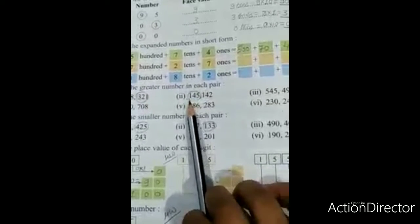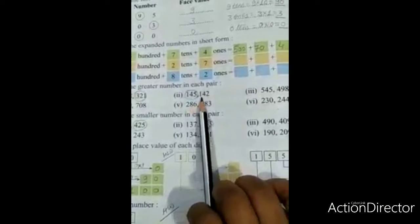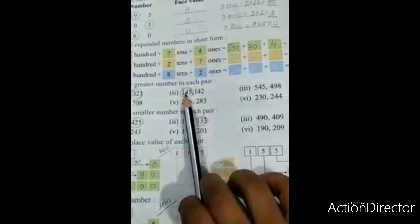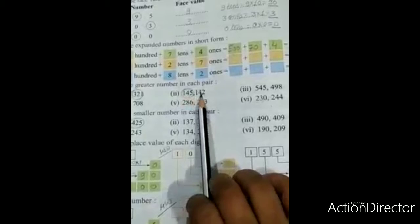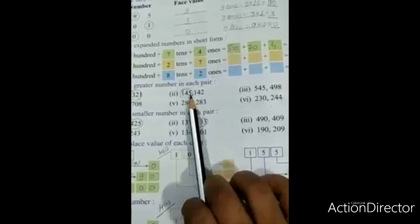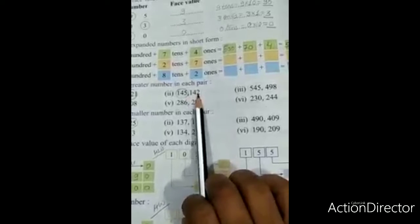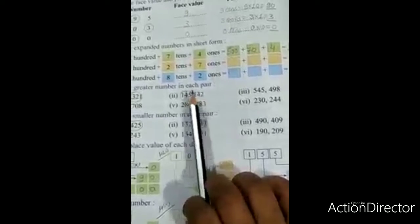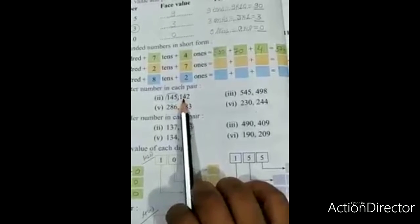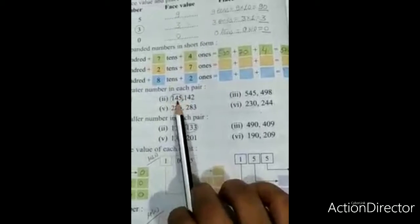Number two: 145 and 142. The hundreds and tens places - 1 and 4 - are the same. So we compare the ones place. In the ones place, here is 5 and here is 2. Five is greater than two, so 145 is greater than 142. Circle 145. Numbers three to six are your homework.